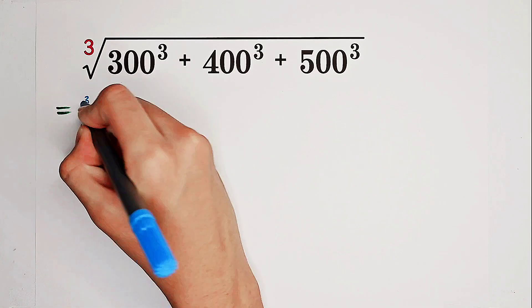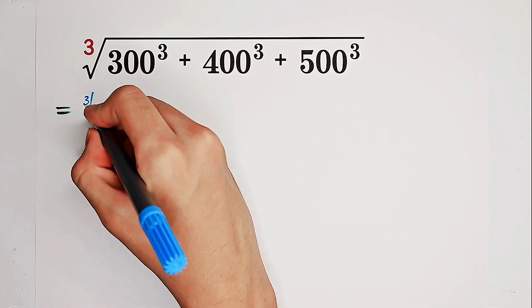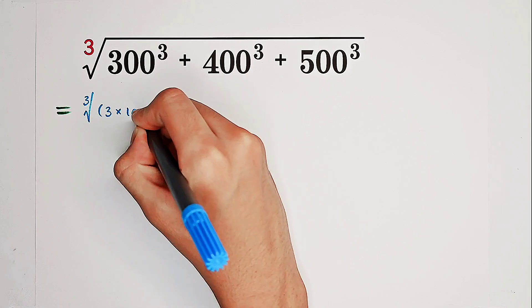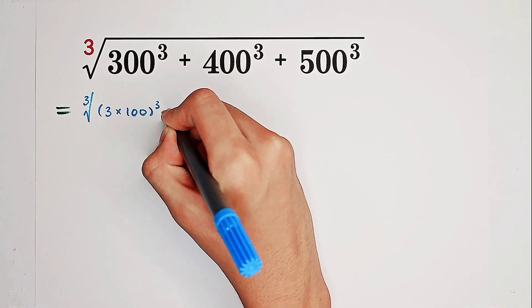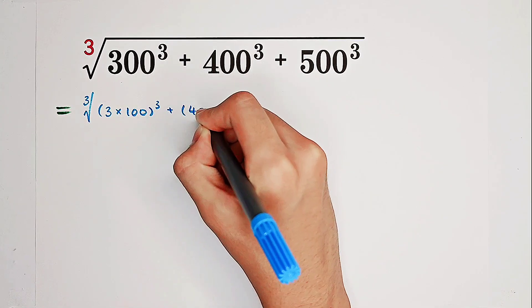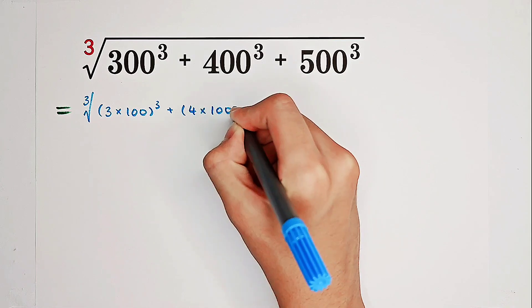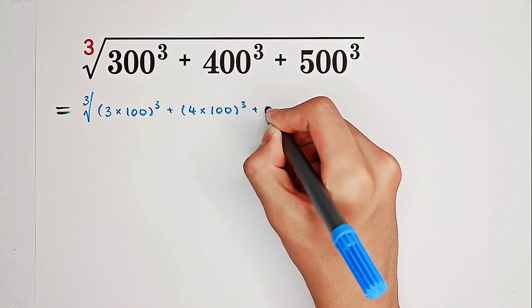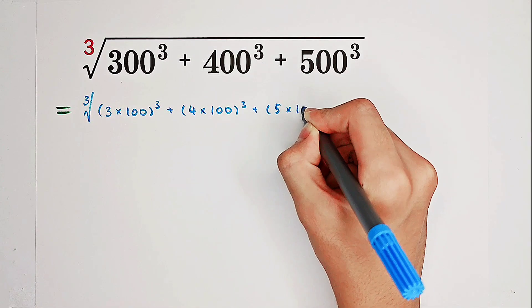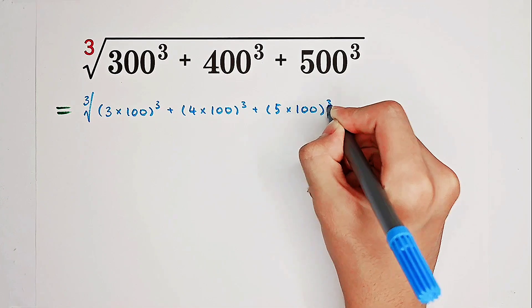So we can actually take it out. It is the cube root of 3 times 100 then cubed, plus 4 times 100 then cubed, plus 5 times 100 then cubed.